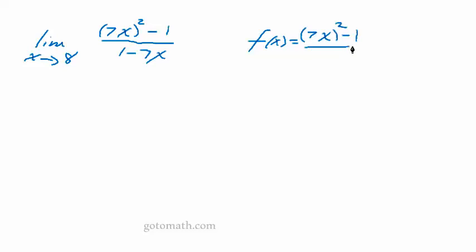We were given the limit as x approaches 8 of (7x)² - 1 over 1 - 7x. And we're asked to find out what this limit is, and we're doing it numerically. And I'm gonna go ahead and write f(x) is equal to (7x)² - 1 over 1 - 7x.